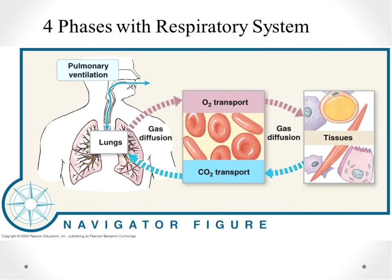When we look at the respiratory system, we normally consider four phases. First, how do we get air to flow into the lungs — the ventilation side — which involves making pressure changes between the lungs and outside the body to create gradients for air to flow from high to low pressure. The second part is transporting gases to the cells, which is the role of the cardiovascular system and the blood. Oxygen is carried two ways: dissolved as a gas in the plasma, and bound chemically inside red blood cells attached to the protein hemoglobin.